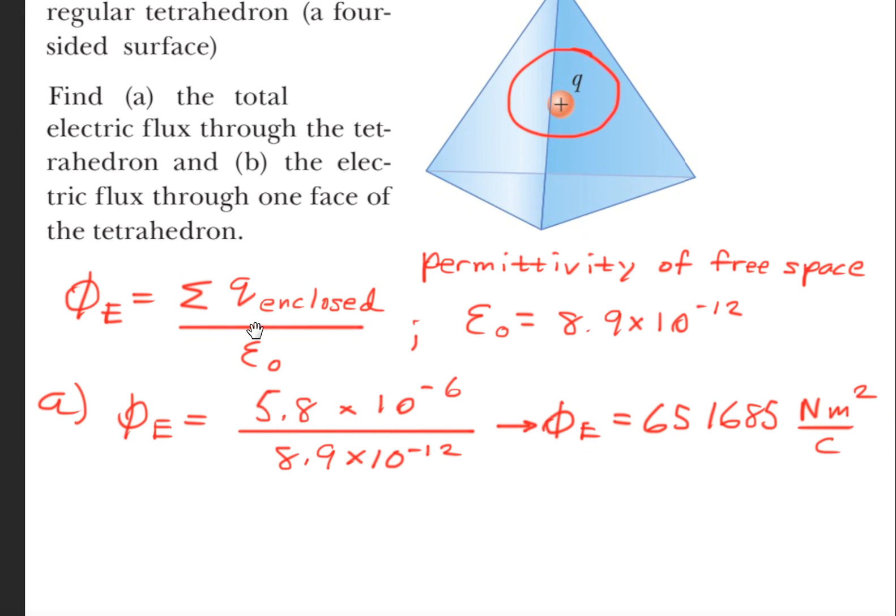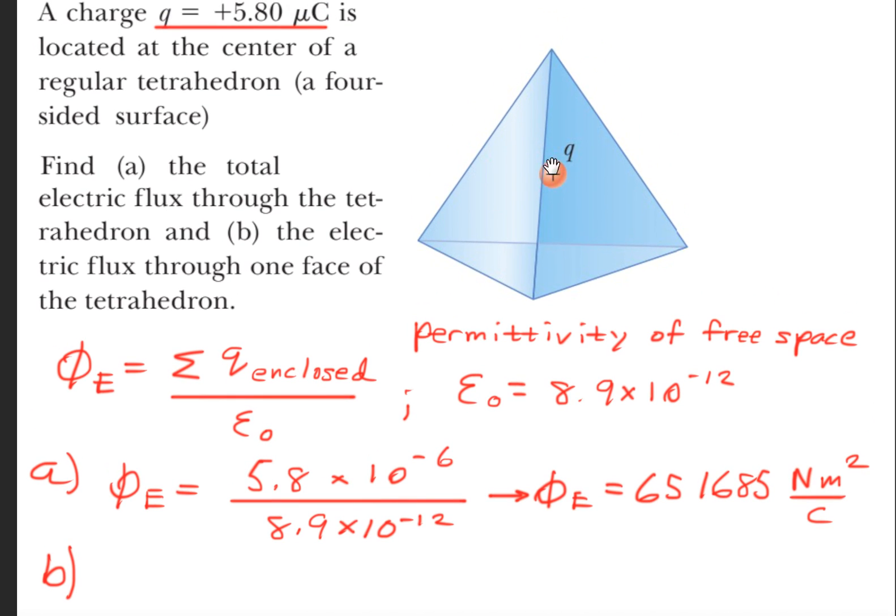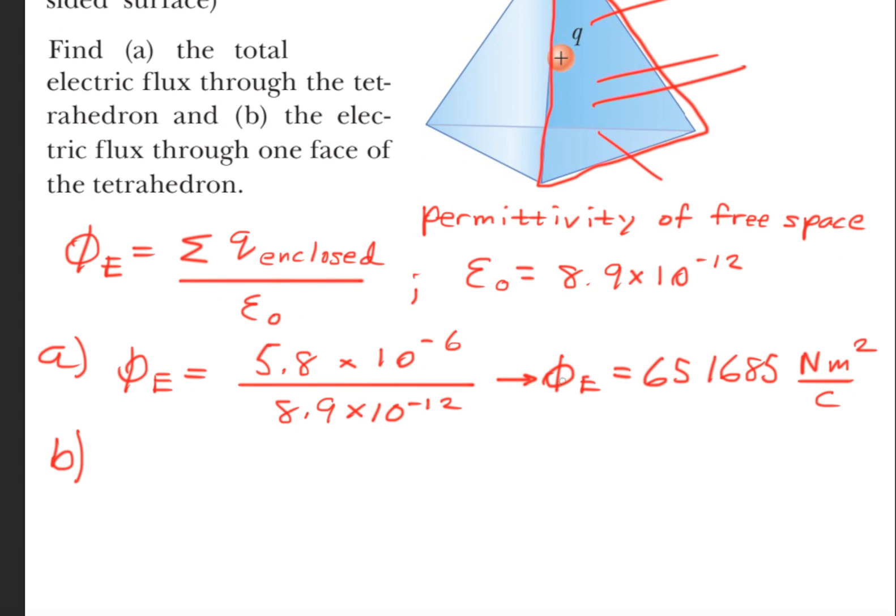Now to solve part B, find the electric flux through one face of the tetrahedron. So there are four sides of this polygon, and for instance, we're interested in one of the faces, to find the flux coming out of here. So simply, we will divide this value here by 4. So this will give us approximately 162,921 newton meters squared per coulomb for the electric flux through one face of the tetrahedron.